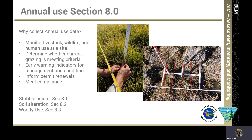Annual use includes three methods: stubble height, which is Section 8.1; soil alteration, which is Section 8.2; and riparian woody use, which is Section 8.3.